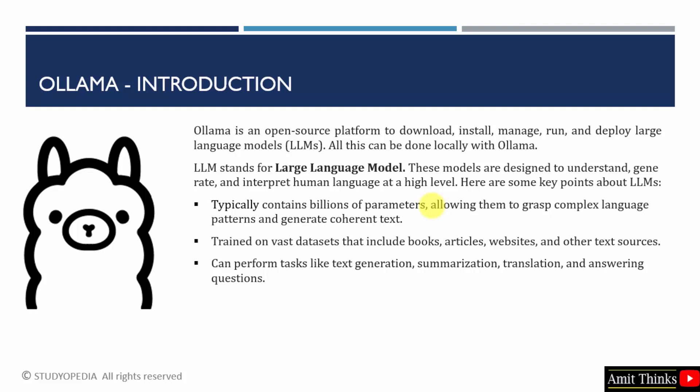LLM processes the information and generates new content for you, which is why we call it Generative AI. It can perform tasks like answering questions, translation, and summarization. It can also generate text for you — like you can write an article, blogs, or an email from it.